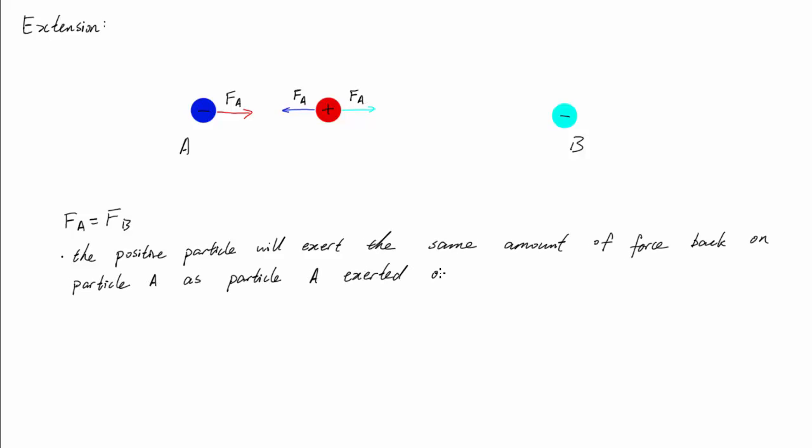So let's look at our system again. Remember how in part A we changed the distance such that the positive particle experiences the same amount of force from both A and B? The same amount of force pulls particle A towards the positive particle as discussed in previous videos. This is the same for the interaction between the positive particle and particle B.